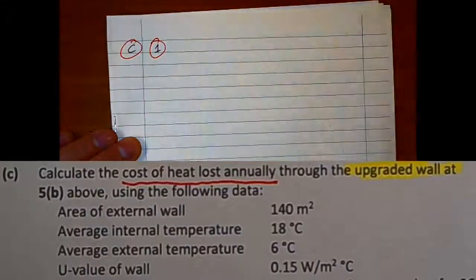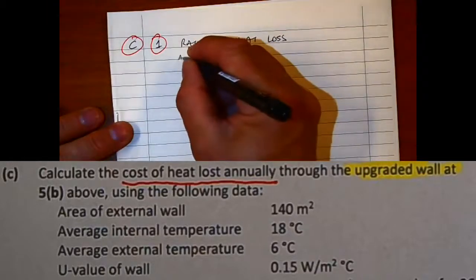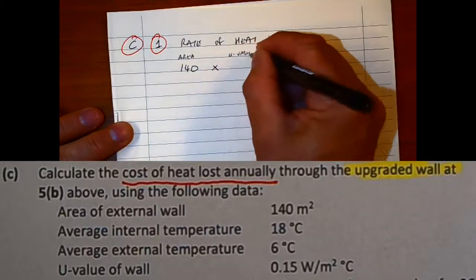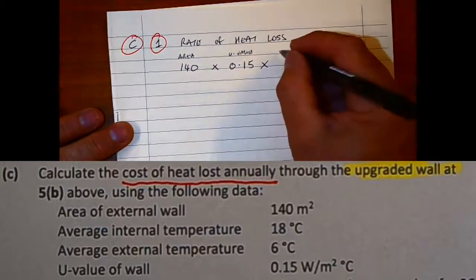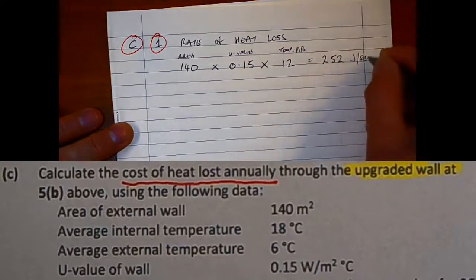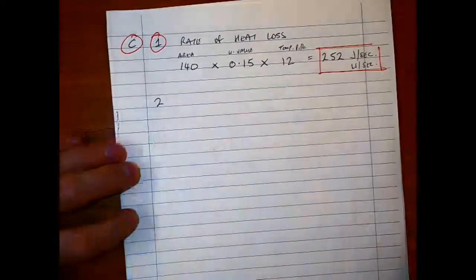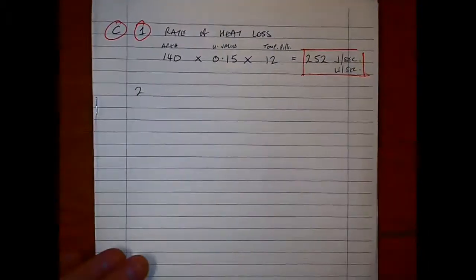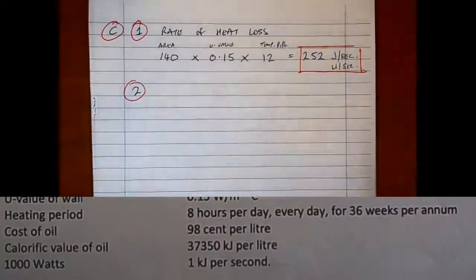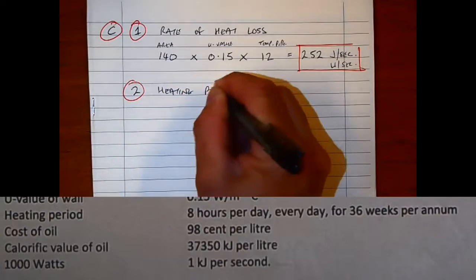For part C of the question, we're asked to calculate the cost of heat lost annually. We're given—and I'm going to break it down into sections here—the very first part we have to work out is the rate of heat loss. The formula for that is: you multiply your area, in this case 140, by the U-value, which is 0.15, by the temperature difference, which is 12 (6 from 18). Multiply that out, and it gives us a value which is measured in joules per second or watts per second, which is important because we break it down into the seconds.